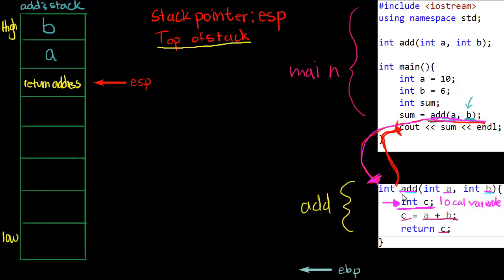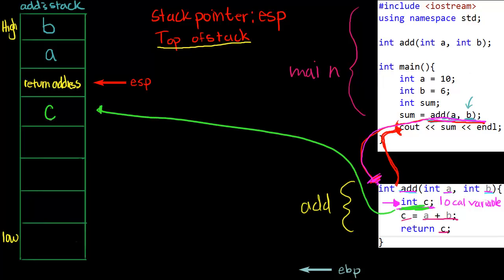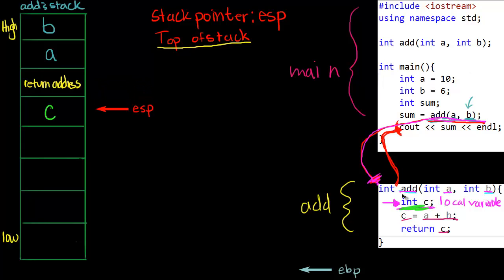It's really simple. All that happens is this local variable gets stored on the stack - on `add`'s stack. When this line runs, `c` gets pushed onto the top of the stack. Because ESP always has to point to the top of the stack, ESP moves down to point to `c`. It's a bit counterintuitive, but that's it - that's all that happens when we have local variables.